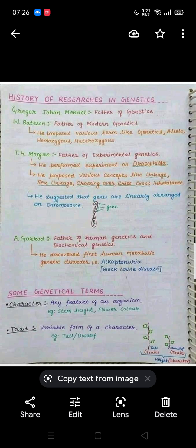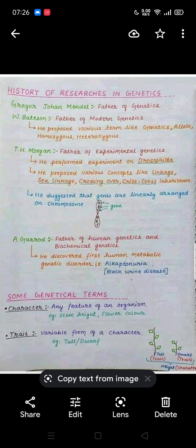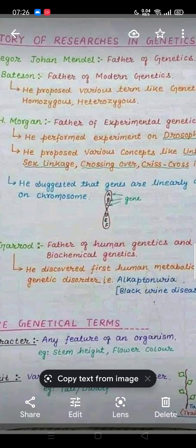T.H. Morgan performed experiments on Drosophila and proposed various concepts like linkage, sex linkage, crossing over, and crisscross inheritance. He suggested that genes are linearly arranged on chromosomes. Here in the figure you can see a chromosome with genes A, B, C, D, E, F that are linearly arranged on it.